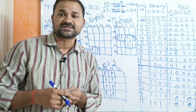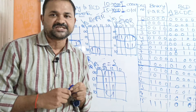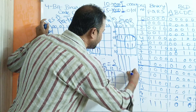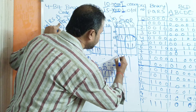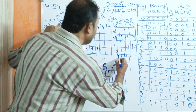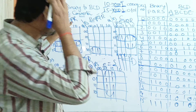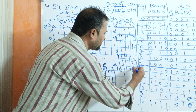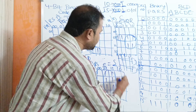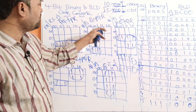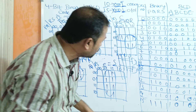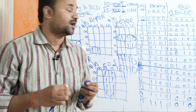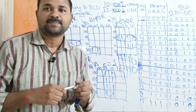So likewise, we have simplified expressions for A, B, C, D, and E. From these expressions, we can easily draw the logic circuit diagram. If we have inputs PQRS, the first output A uses an AND gate with inputs P and Q, and another AND gate with inputs P and R, combined with an OR operation. Likewise, we can easily draw for B, C, D, and E by making the appropriate connections. So this is about the 4-bit binary to BCD code converter.